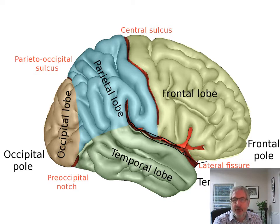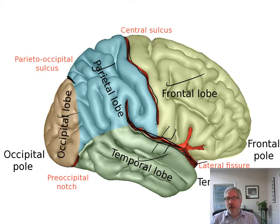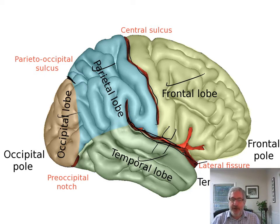We have the central sulcus going down through here. We have a parieto-occipital sulcus here, and you can see it actually on the medial side very easily. So you have the frontal lobe, parietal lobe, occipital lobe, and temporal lobe. And if you pull apart this — use the retractors — you can pull those apart and you can see the insula underneath.